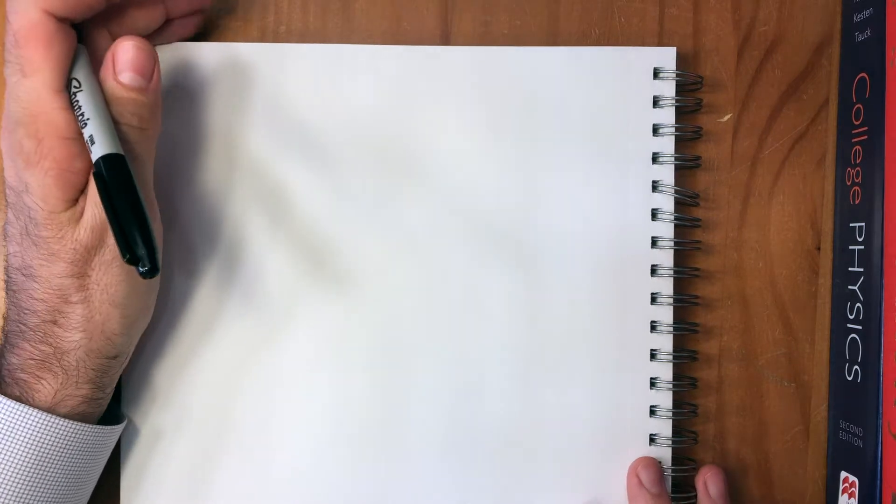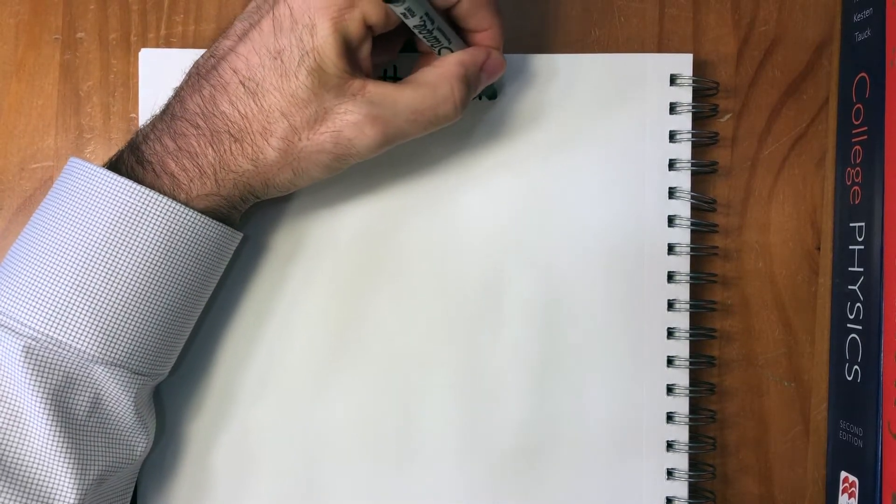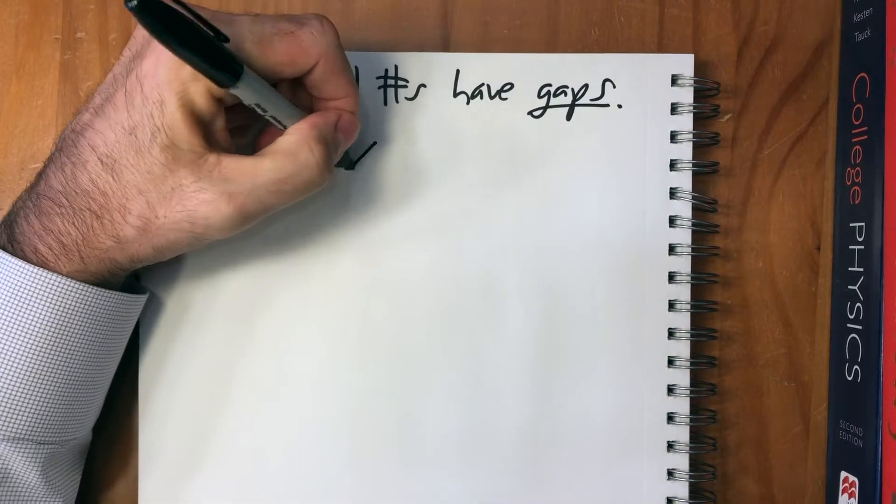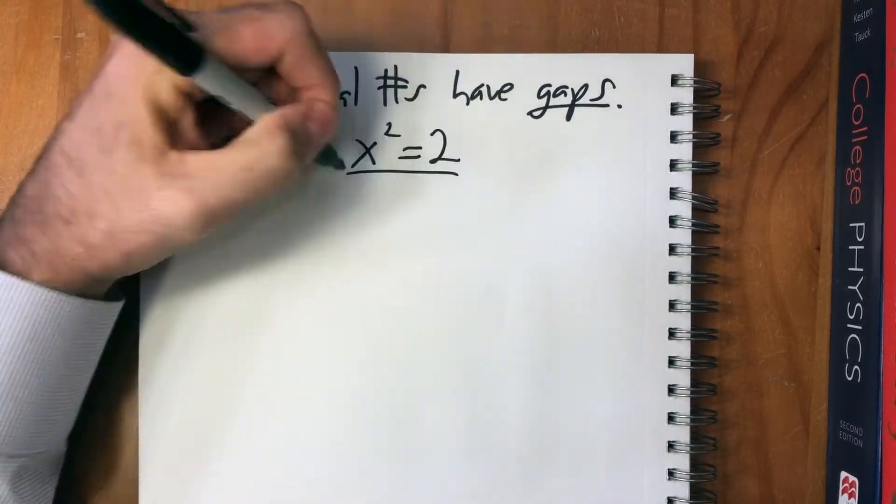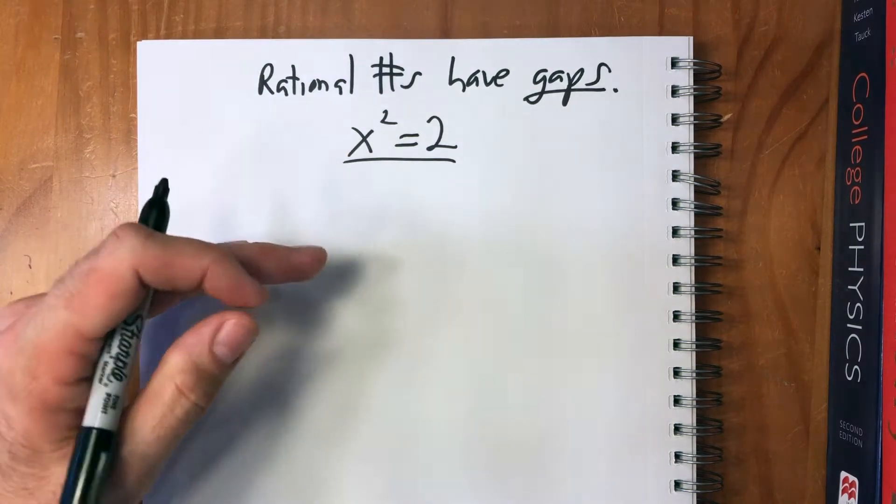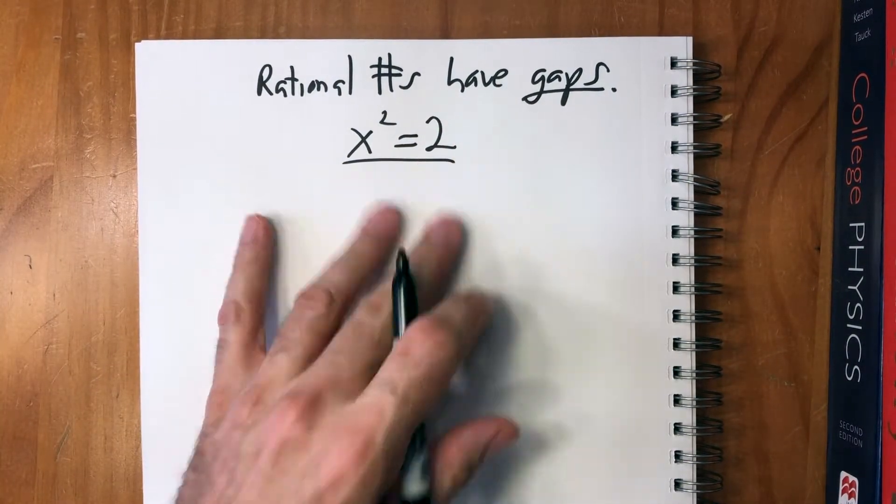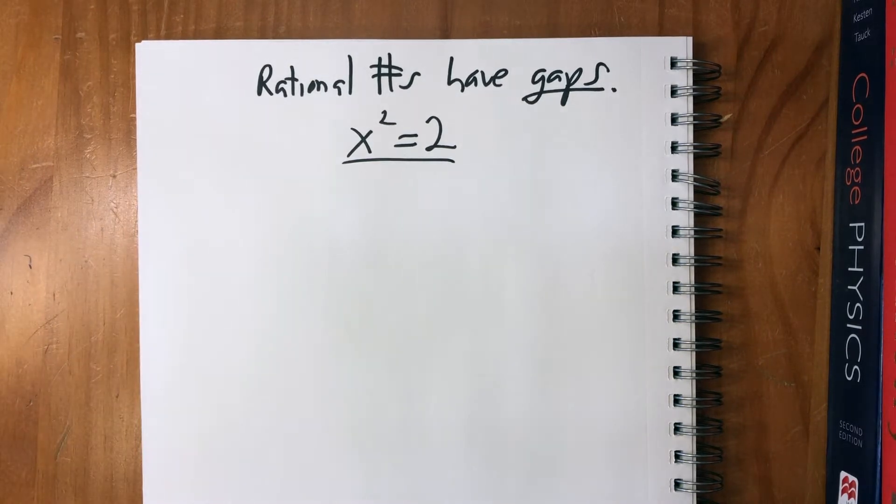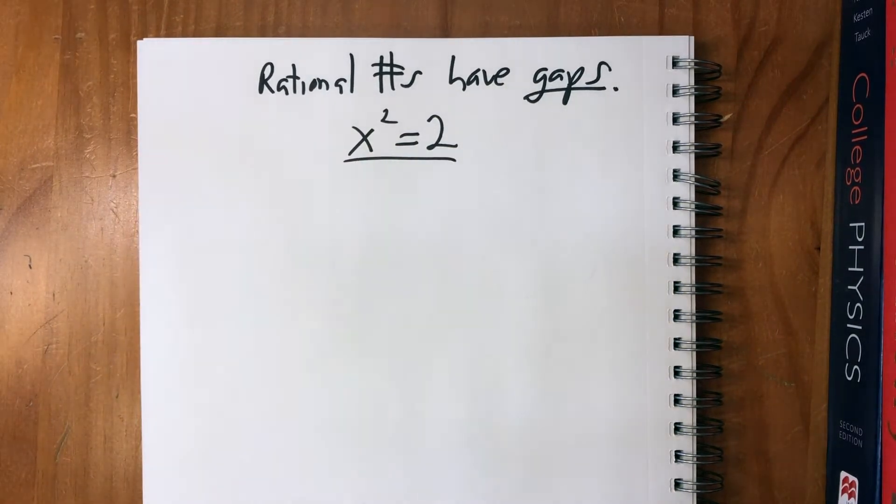Okay, before we get started, I want to go over real quickly where we've been and where we're going. What we're working toward is creating a field that will fill in the gaps of the rational numbers. Remember, we started by saying that rational numbers have gaps. For instance, there's no solution to this in rational numbers. So we're going to construct the real numbers specifically in order to fill in those gaps. And basically, all of calculus is based on the result of filling in those gaps.